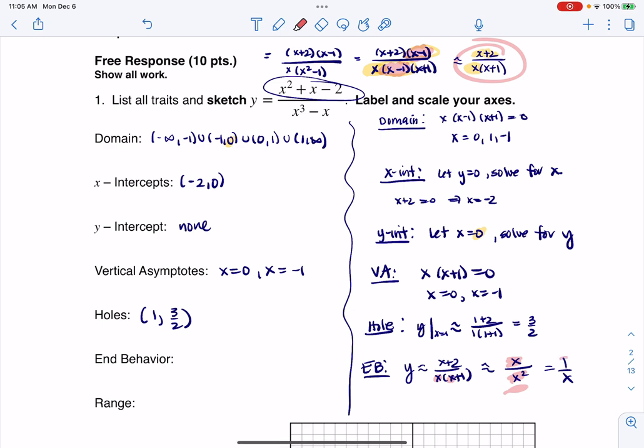Even in the simplified version, here the degree is 0, here the degree is 1. The denominator has the larger degree. And when we have that case, we always have that horizontal asymptote at y equaling 0. So I have all my traits except for range. And I personally, I don't get the range until I've gone through and done the graph. So let's go ahead.